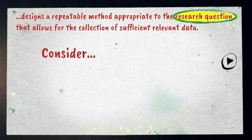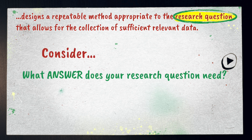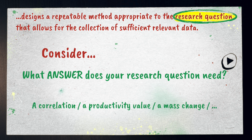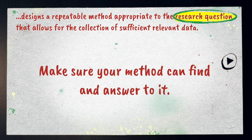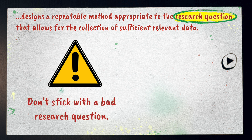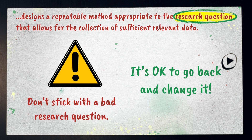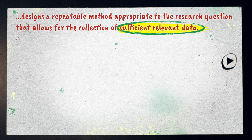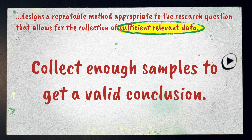Next, your method must be appropriate to the research question. Consider what answer your research question needs — is it a correlation, a productivity value, a mass change? Whatever your research question requires, make sure your method can find an answer to it. It's also okay to go back and change your research question at this point if you want to.